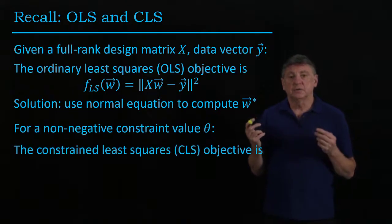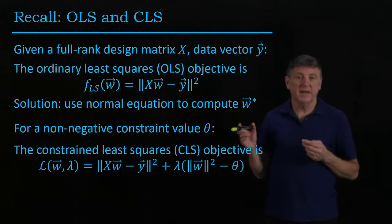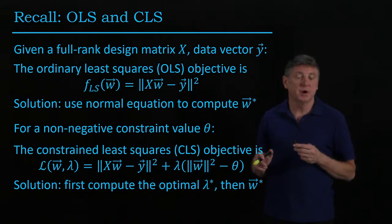In constrained least squares, we're given a non-negative constraint value, and we then have to solve a constrained optimization problem where this is a Lagrange function. The solution we had was first we compute the optimal Lagrange multiplier, and then we compute the optimal vector.